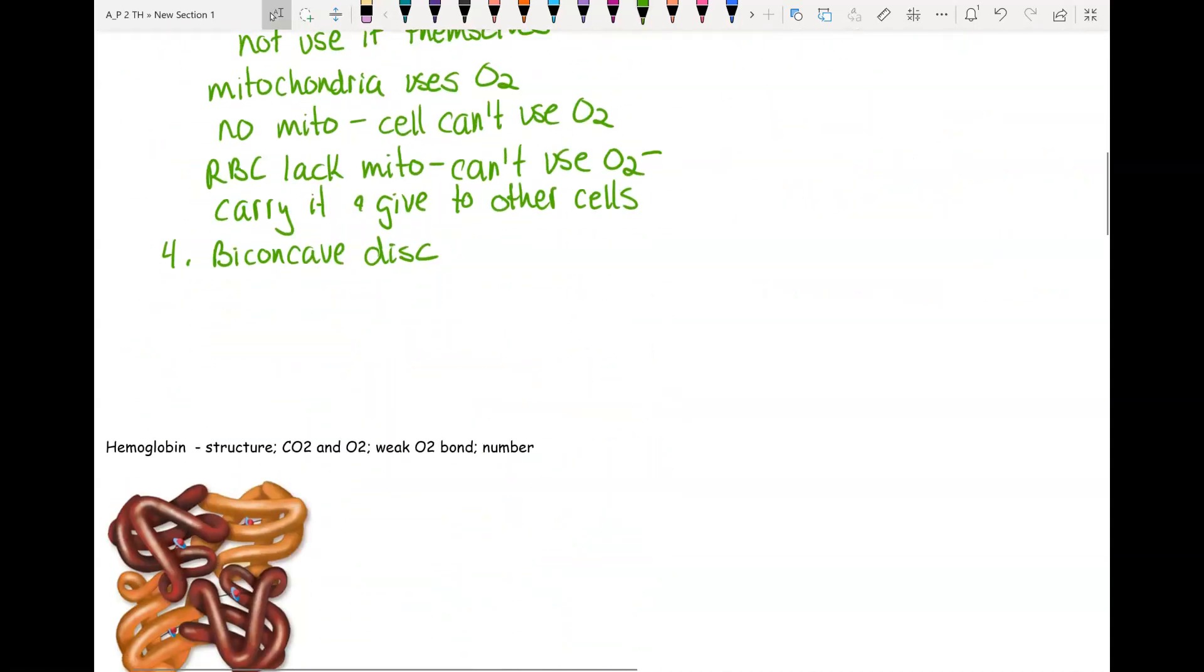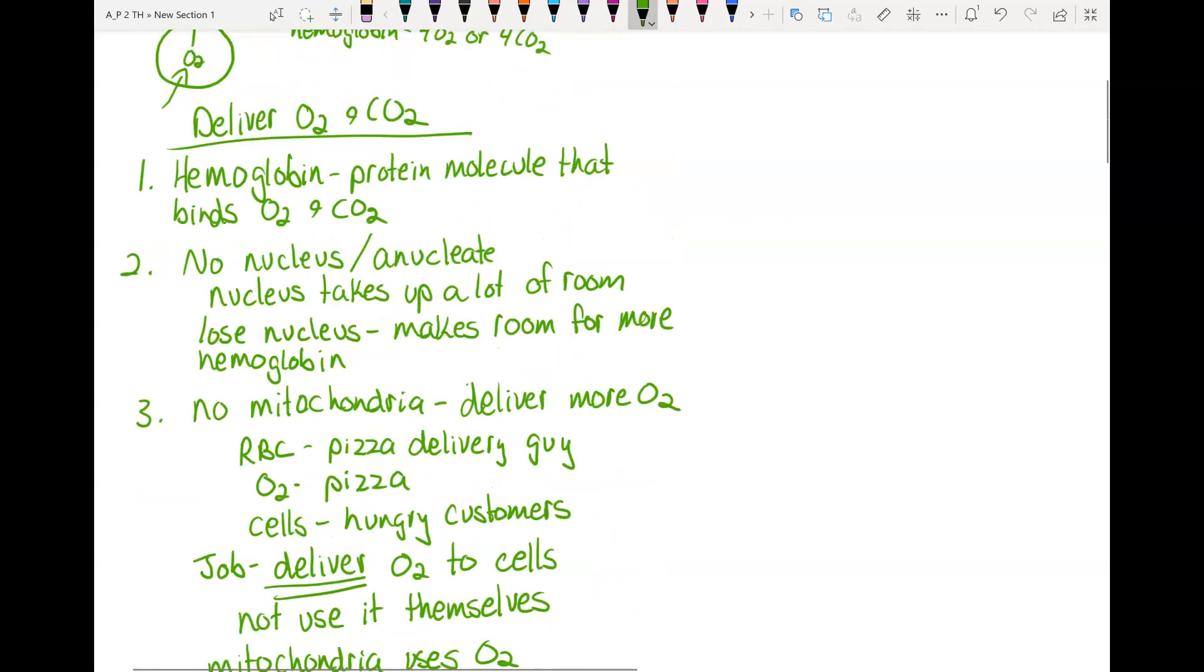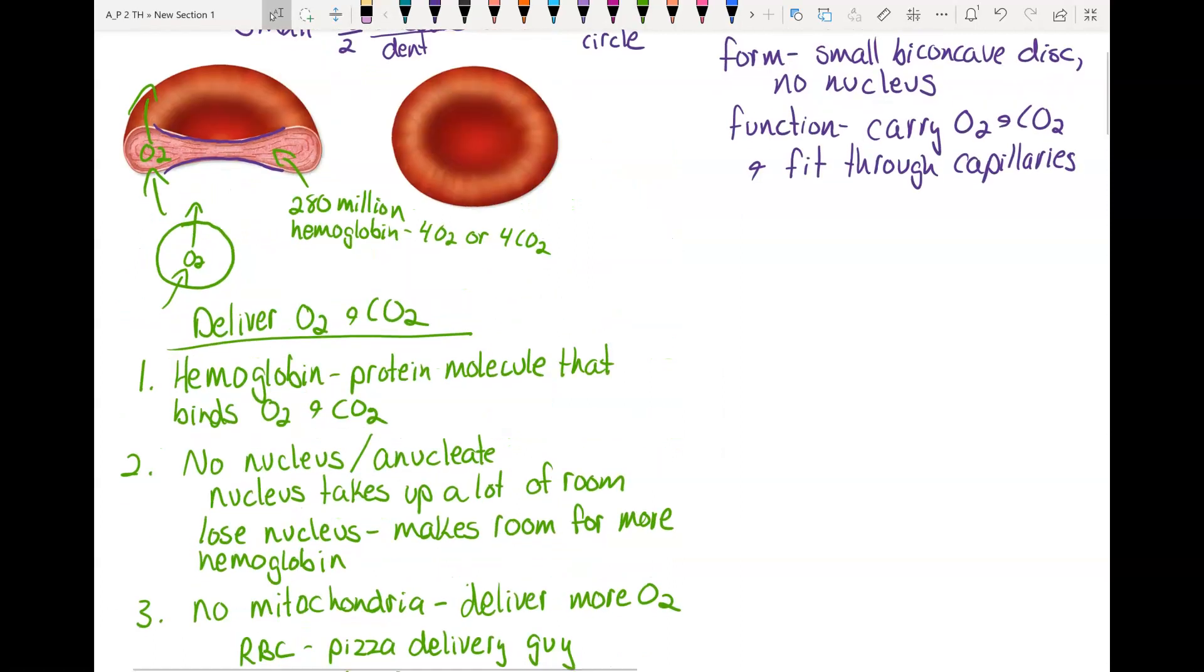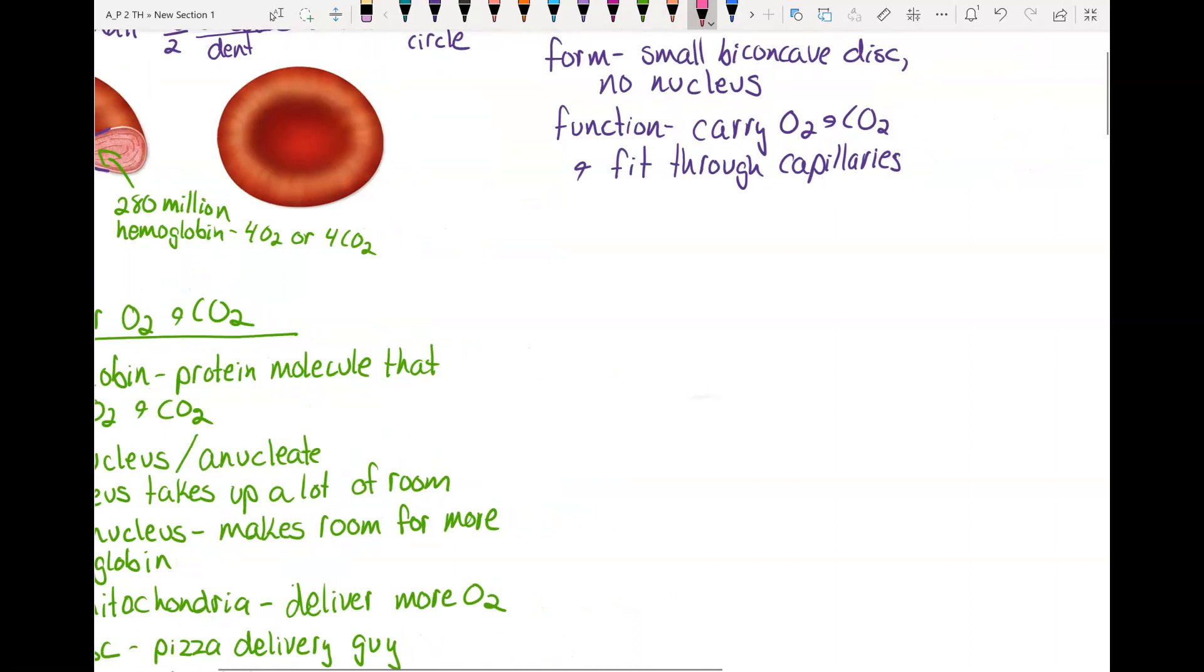So the biconcave disc allows for faster diffusion in and out. It's quick for the oxygen to diffuse in, to diffuse out, as opposed to if the cell were spherical. Our other function is that they have to fit through capillaries. So let's look at how they fit through capillaries.